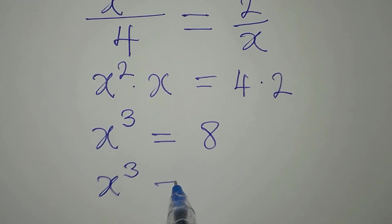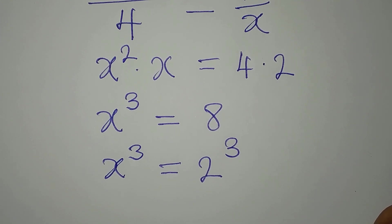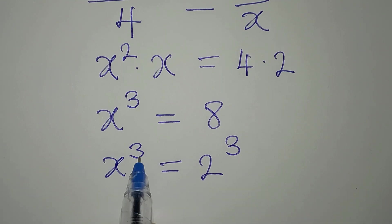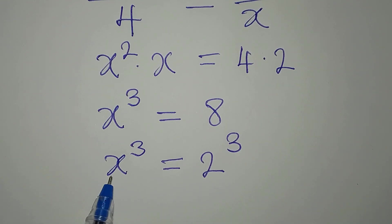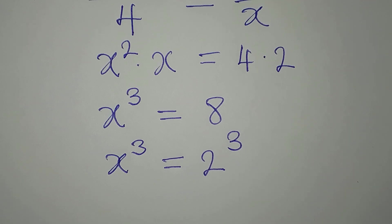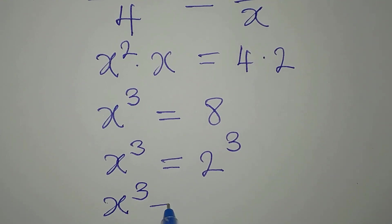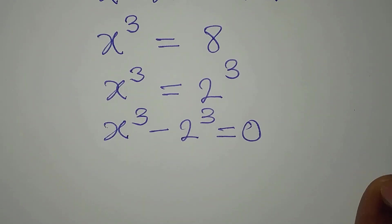Now x to the power of 3 is equal to 2 to the power of 3, so that what we have on the left and on the right will be in the same form — to the power of 3. Ordinarily we would equate the bases since the powers are the same, but that won't give the complete solution. So we bring this to the left: x to the power of 3 minus 2 to the power of 3 equals 0.